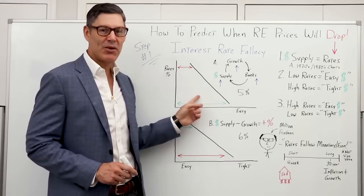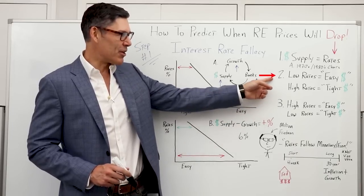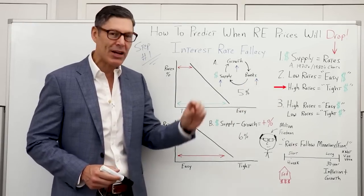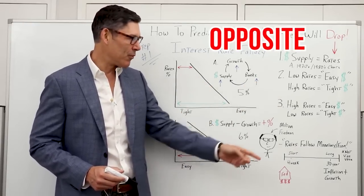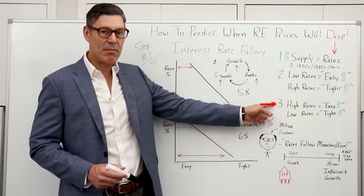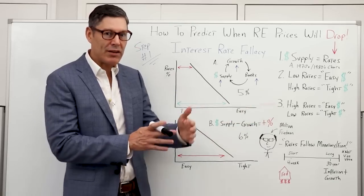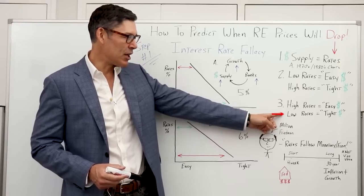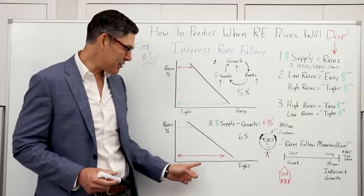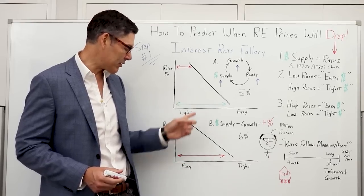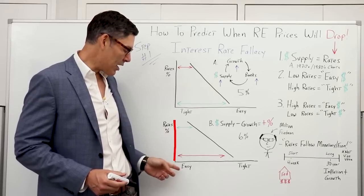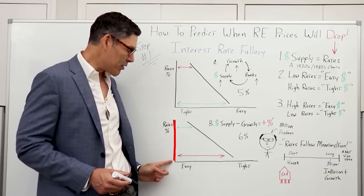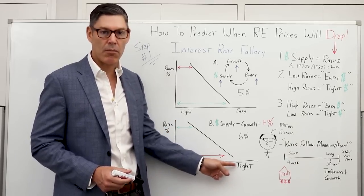Friedman says you don't know what you're talking about. Low interest rates don't signal an easy money environment, and high interest rates don't signal tight money — it's actually the exact opposite. If we see high interest rates, this means money is relatively easy, as we saw with the quick expansion of the money supply in the 1970s. And low rates equals tight money conditions. So Friedman's chart is pretty much the opposite: as rates go up, conditions are easier; as rates go down, conditions are far more tight.